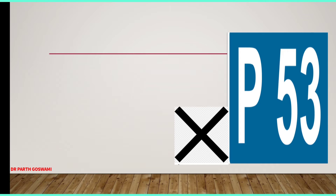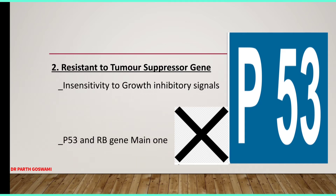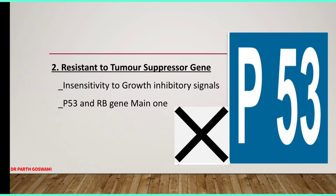The second molecular hallmark of cancer is insensitivity to tumor suppressor genes. The main tumor suppressor genes are the RB gene and p53, which inhibit the growth signal. Whenever these genes are not working, growth signals are not inhibited, the cell cycle is not inhibited, and so you will have continuous cell proliferation and cancer. There will be insensitivity to growth inhibitory signals.